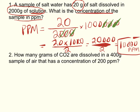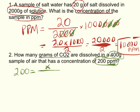Number two asks: how many grams of CO2 are dissolved in a 400-gram sample of air that has a concentration of 200 PPM? In this problem, I'm given the PPM, so I write: 200 equals grams of CO2 (my unknown, my solute) divided by the mass of solution, which is 400, times one million.